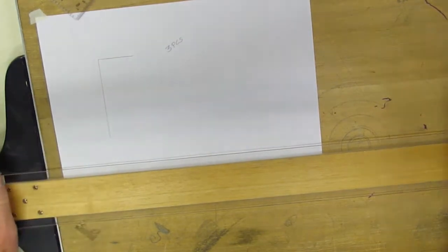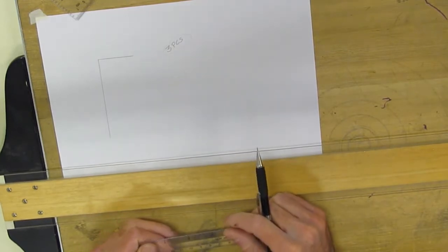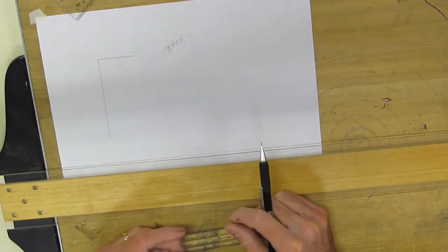The next is we need to determine in our step number two how many divisions we need. We've determined that already. I gave that to you as three pieces. I would like you to try a three piece and a five piece.